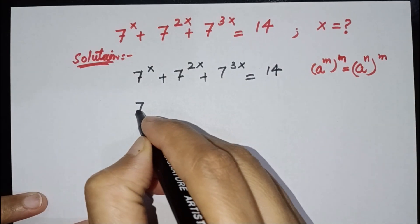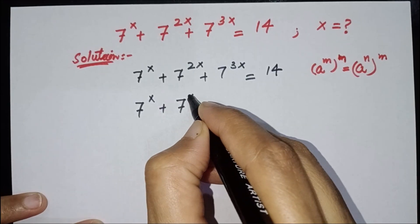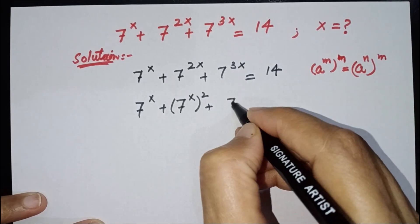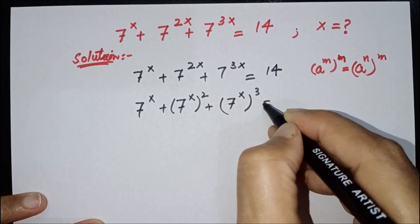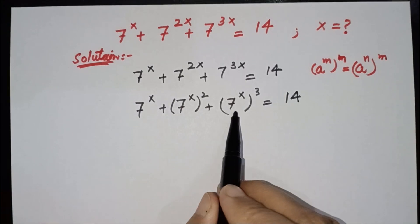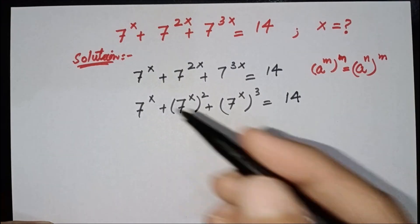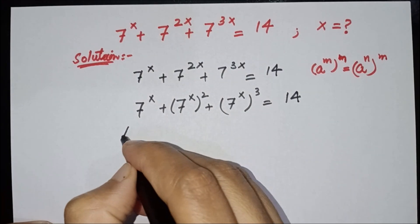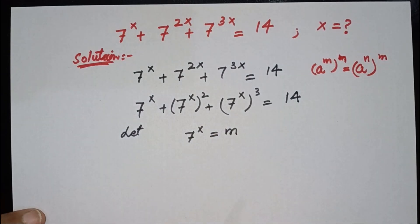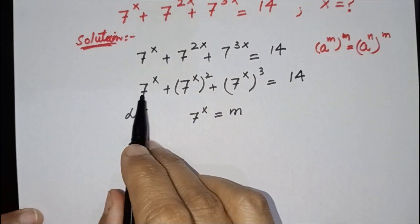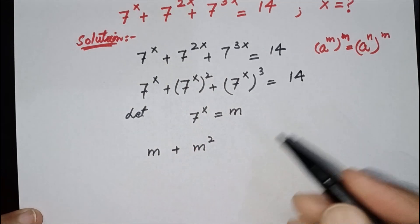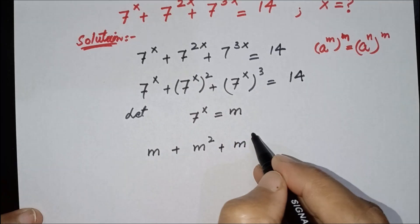So 7 to the power x plus 7 to the power x, parenthesis 2 — I will write 2x as x squared. Similarly, 7 to the power x, parenthesis 3 to the power 3, is equal to 14. Here we have 7^x, 7^x, and 7^x, so we can make a substitution: let 7^x equal m.